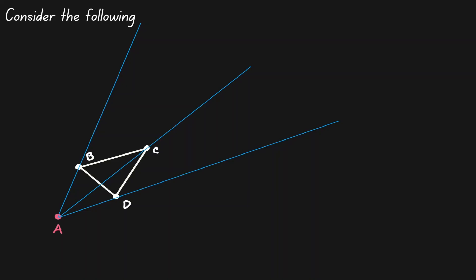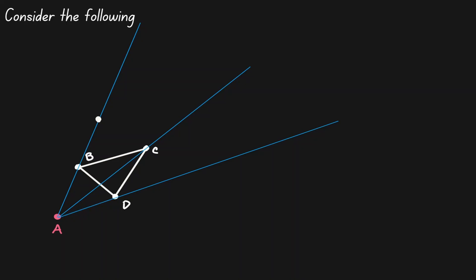Let's consider the distance from A to B — that's about 3.5 cm. Now what will happen if we double that distance? So now starting from B, let's do another 3.5 cm, which is about here. Let's place a new coordinate point. Now let's find the distance from A to D, which is about another 3.5 cm. Let's double that distance, which is about there. Let's create a new coordinate point.